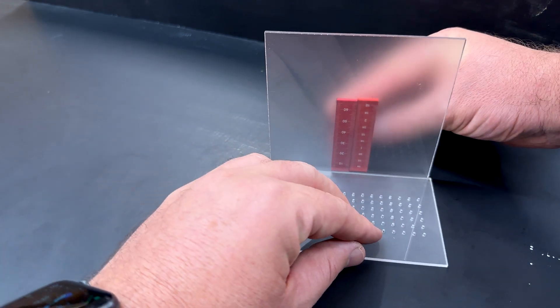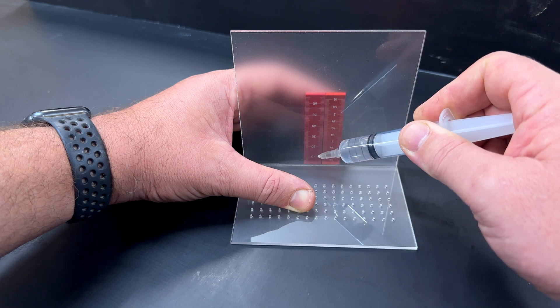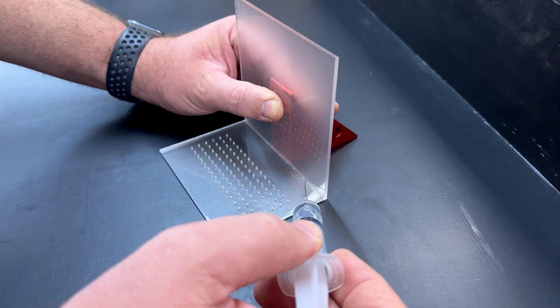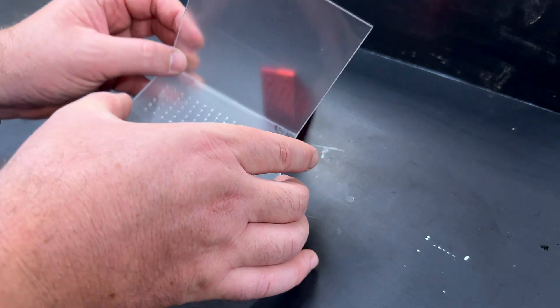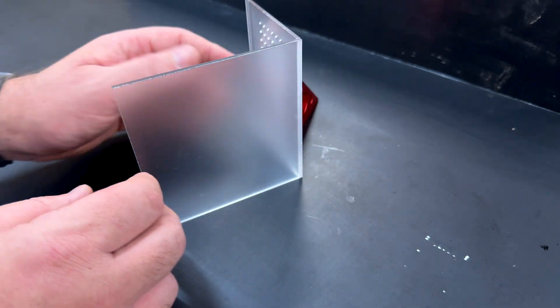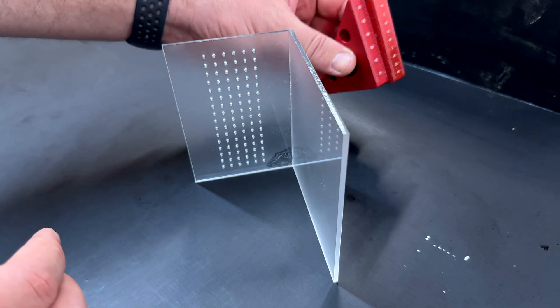So one tip with applying the weld-on is you don't have to actually flood this joint. You just need to put a little bit down and it'll spread by itself into this joint. After about 30 seconds or so you can carefully move that and just turn it on its side. So now we've got our 90 degree angle done and we don't actually need these anymore.